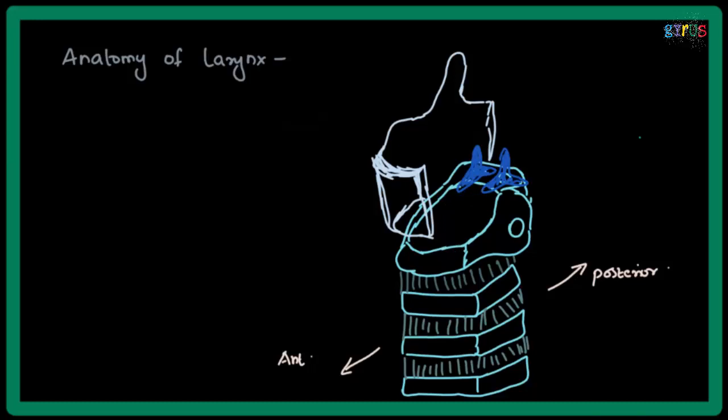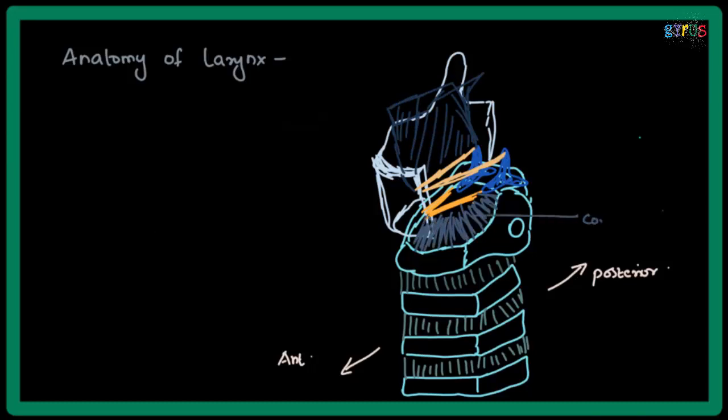Next we are going to see the vocal cords. This is the false vocal cord and this is the true vocal cord. The true vocal cords are narrower than the false vocal cords. There is a membrane between the true vocal cords and the cricoid cartilage, and a membrane between the false vocal cords and the free end. The membrane between the true vocal cords and the cricoid cartilage is conus elasticus, and the other one is the quadrangular membrane.